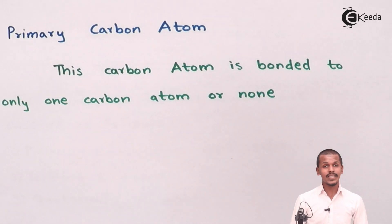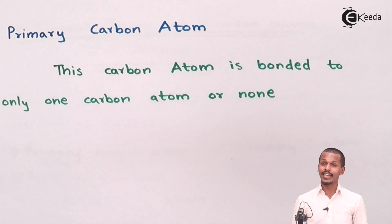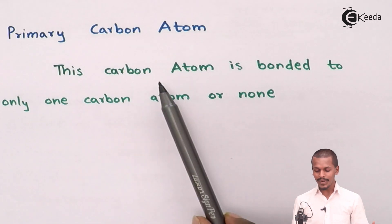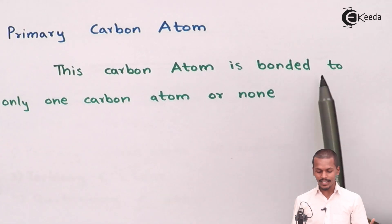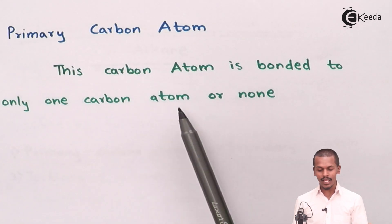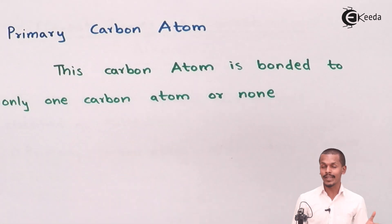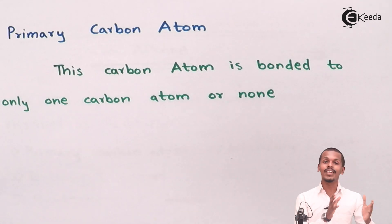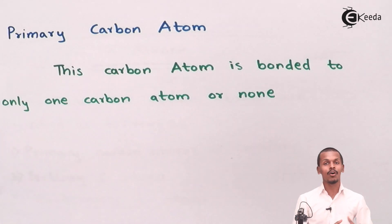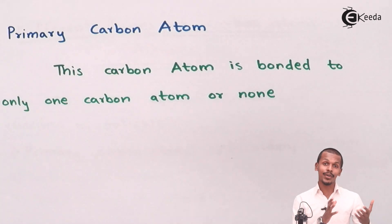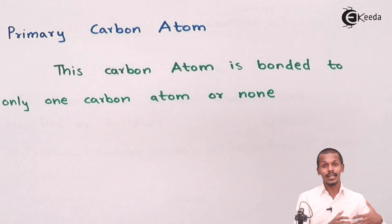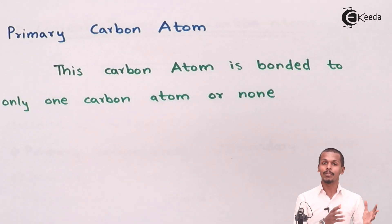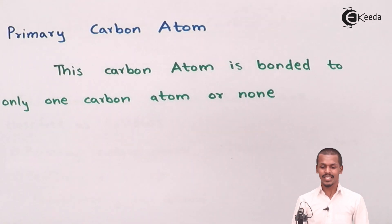A primary carbon atom is bonded to only one carbon atom, or none. The carbon atom which is bonded to only one other carbon atom directly is called a primary carbon atom.